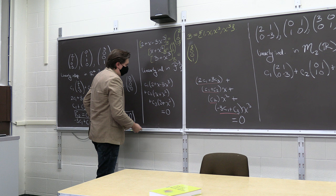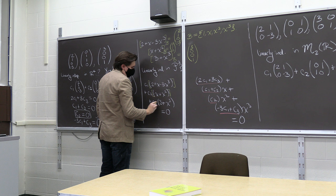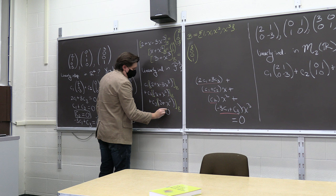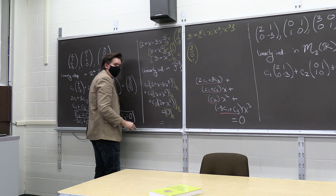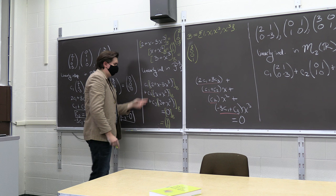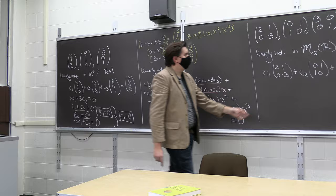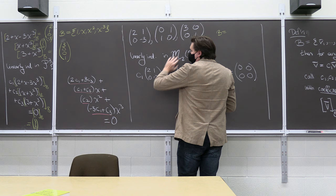Looking for a linear combination of these polynomials equal to zero is exactly the same as looking for a linear combination of their coordinate vectors equal to zero. The zero polynomial, expressed in this basis, is just the zero vector (0, 0, 0, 0). So these two problems — polynomials in P3 and vectors in R4 — are not just analogous but identical. What basis should we use to convert the 2×2 matrices into vectors?